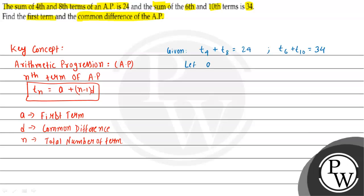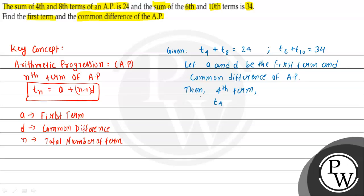Let A and D be the first term and common difference of the AP. The 4th term is T4 = A + (4 - 1) × D = A + 3D. Similarly, the 8th term is T8 = A + (8 - 1) × D = A + 7D.